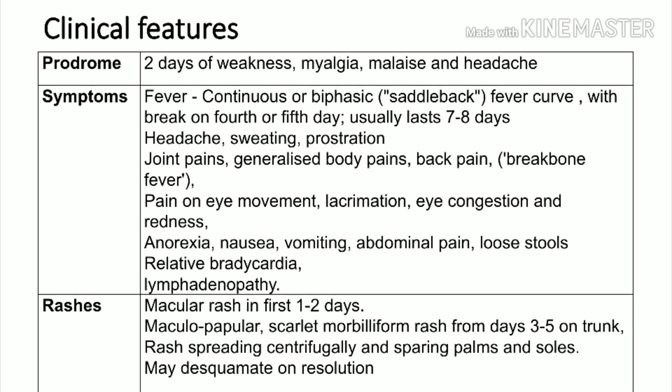Joint pains are one of the classical features; most patients with dengue fever will have joint pains. Pain during eye movements, severe lacrimation, and eye congestion are very common. Like any other viral fever, these patients also have anorexia, nausea, vomiting, abdominal pain, and loose stools. Loose stools are classically seen in many dengue cases.